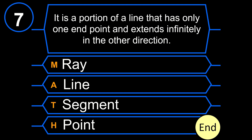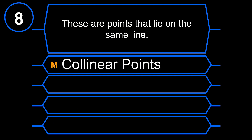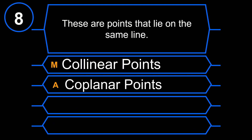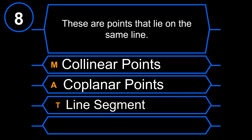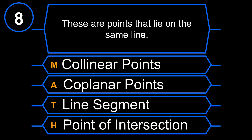Let's move on to question number 8: These are points that lie on the same line. M. Collinear Points. A. Coplanar Points. T. Line Segment. H. Point of Intersection.